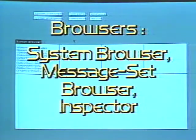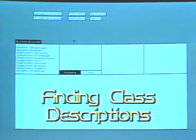Browsers are windows used to find information. System browsers are used to find information about Smalltalk 80 classes and instances. They are used to modify existing class descriptions and to create new class descriptions. Class descriptions often contain examples of how to use them. Class pen includes an example of how to use an instance of pen to draw designs.